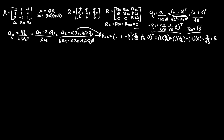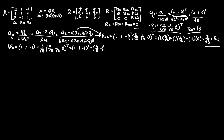Now we can find psi2, which is A2 minus R12 times Q1: (1, 1, -1) minus 3 over root 5 times (2 over root 5, 1 over root 5, 0). This gives us (1, 1, -1) minus (6/5, 3/5, 0). Thus psi2 equals (1 - 6/5, 1 - 3/5, -1 - 0) = (-1/5, 2/5, -1) transposed. This is psi2.